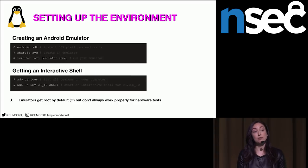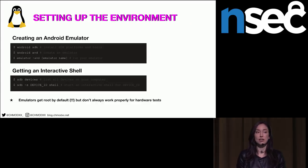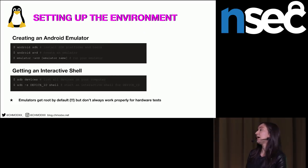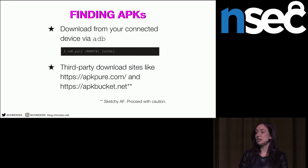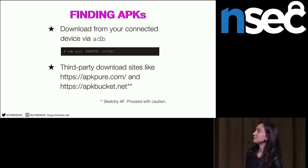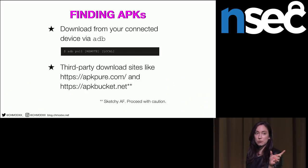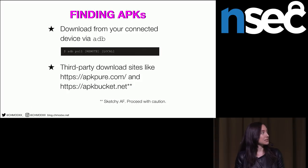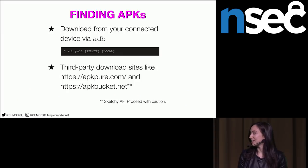Emulators run as root by default, but they don't always work with hardware tests — if you're doing hardware exploit work, you'll probably need a real device. Where do you find APKs? If your developer team says go get it off the Play Store, you can actually download any APKs on your device from ADB using a pull command with the remote and local paths. You can also go to third-party download sites like APKPure and APKPocket.net — they're sketchy but they do work.